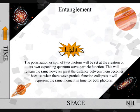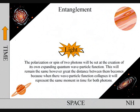We have entanglement because light moves through space, but not time, as a wave-particle function. The polarization of two photons will be set at the creation of its own expanding quantum particle wave function.